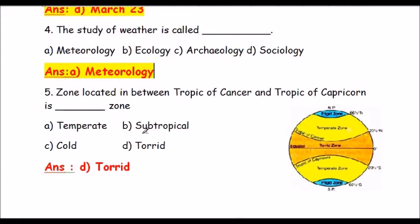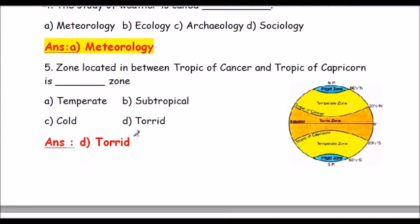Question number 5: The zone located in between the Tropic of Cancer and Tropic of Capricorn is called what zone?